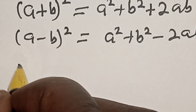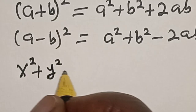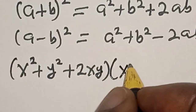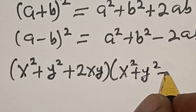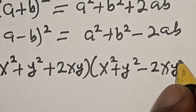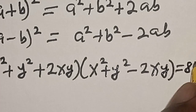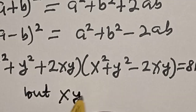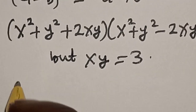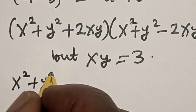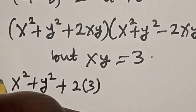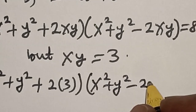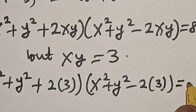Now let's substitute. We know that xy is equal to 3. So we have x squared plus y squared plus 2xy multiplied by x squared plus y squared minus 2xy is equal to 81.